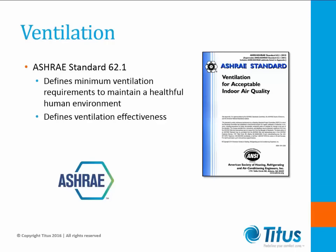Now let's look at ventilation. ASHRAE Standard 62.1 defines the requirements for acceptable ventilation. It sets the minimum requirements in order to create healthful conditions for human occupancy with regard to ventilation. This standard spells out exactly how many CFM or air changes need to be provided based on occupancy, activity, or square footage, and how much fresh air should be provided. Anyone who understands air distribution knows that it's not enough to simply deliver air changes to a room. In order to be effective, fresh air must reach the breathing zone of the occupants.